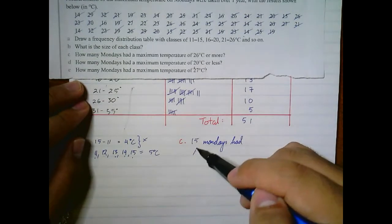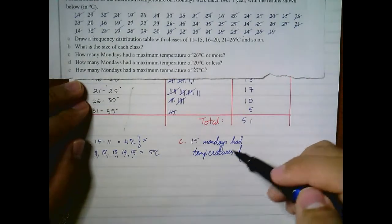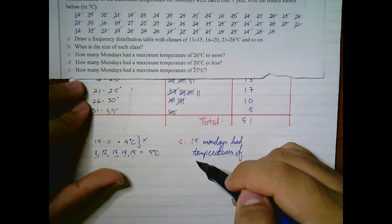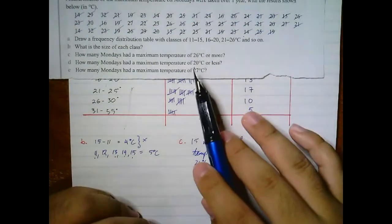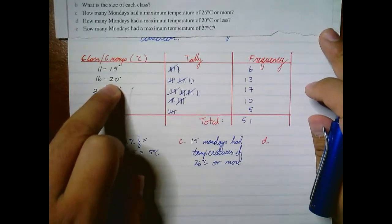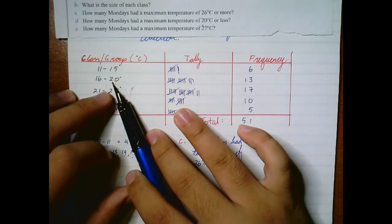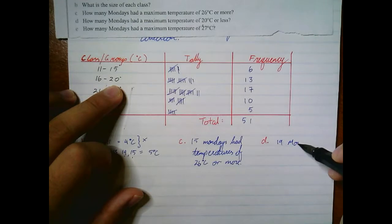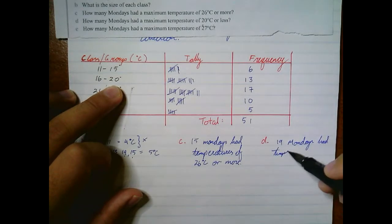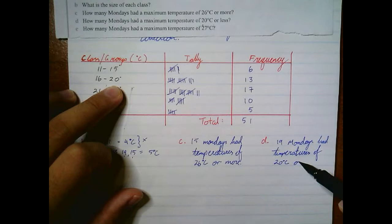15 Mondays had temperatures of 26 degrees Celsius or more. How many Mondays had a maximum of 20 degrees or less? Well, here's 20 degrees, and we want to start from here and count downwards because anything less than this is less than 20. So that's going to be 13 plus 6, that is 19 Mondays had temperatures of 20 degrees Celsius or less.